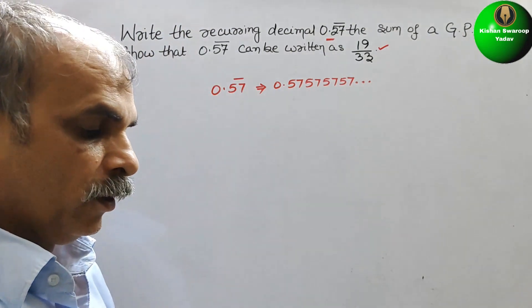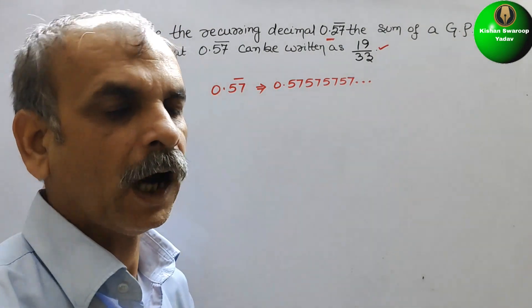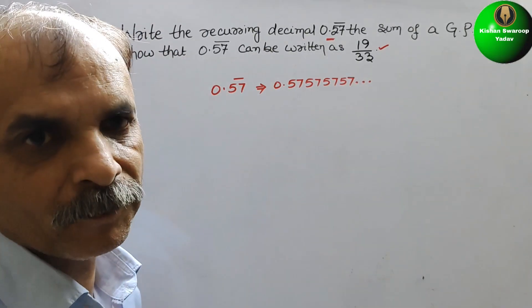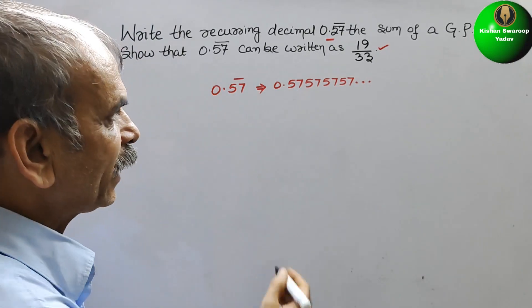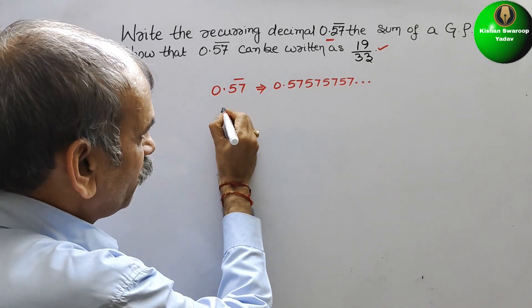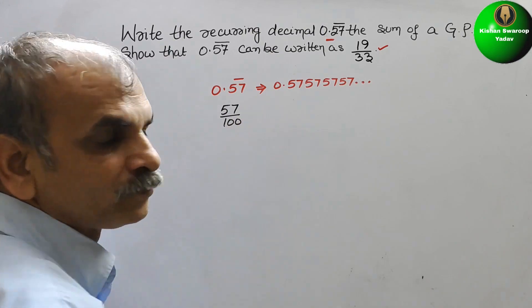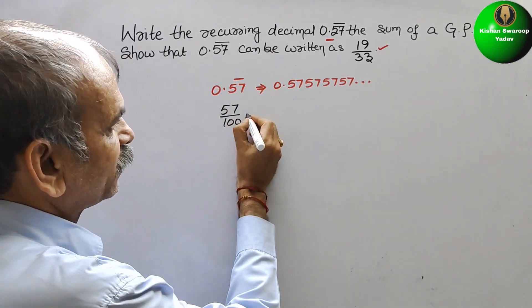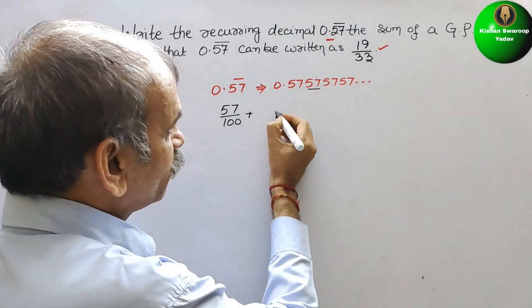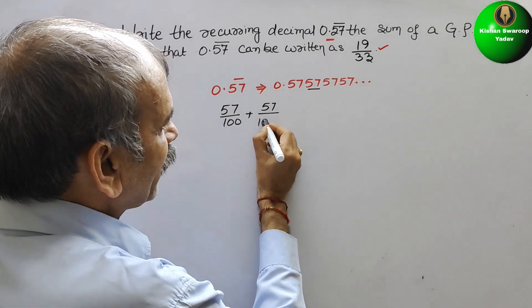Now we will write it in GP, that is in sum. How? You can see this is your recurring 5.7. So we can write it as, after decimal, it is 5.7. That means it will be 57 by 100. Plus, again this 5.7. So this 5.7 is nothing but 57 by 10,000.